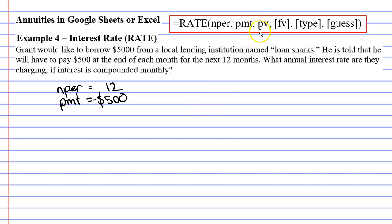The next thing we need to know is our present value, or PV. And what we notice is that Grant borrows $5,000, and he's borrowing this at the beginning. So our present value is $5,000, it's the amount of money that he borrows.